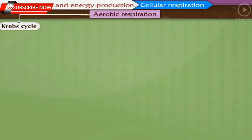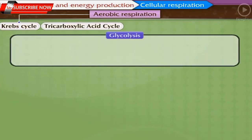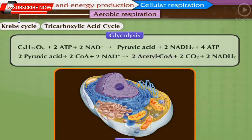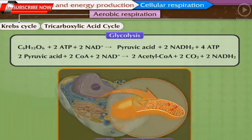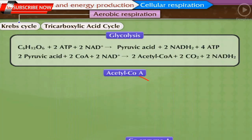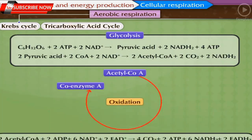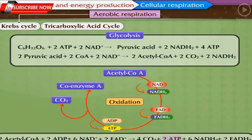Krebs cycle, also called the tricarboxylic acid cycle: both molecules of acetyl coenzyme A formed during glycolysis in the cytoplasm now enter the mitochondria. The acetyl part of acetyl coenzyme A is completely oxidized in this cyclical process, forming carbon dioxide, water, NADH₂, and FADH₂, and releasing energy. The oxidation of acetyl coenzyme A is derived from pyruvic acid, which is derived from glucose — so it is essentially the oxidation of glucose.